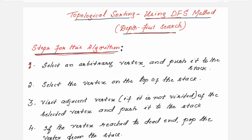I have written the steps for this algorithm. Before I start explaining the steps, I would like to mention that in my previous session I explained topological sorting using the source removal method. As you all know, topological sorting can be done using two methods: the source removal method and the DFS method. The source removal method and the introduction and definition of topological sorting were covered in the previous session.